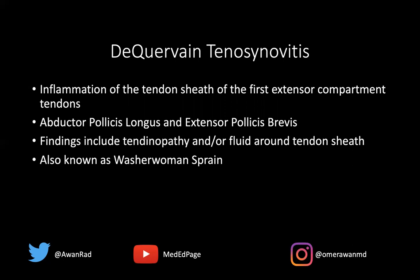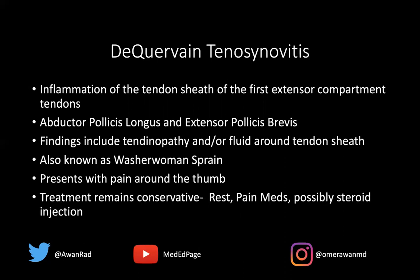De Quervain's is also known as washerwoman's sprain. It was classically described in women who were childbearing and held babies next to their chest, irritating their thumbs. It can be asymptomatic or present with pain along the base of the thumb, which is the most common symptom. Treatment is conservative: rest, ice, pain medications like Tylenol or Advil. Sometimes we inject steroid into the tendon sheath at the first extensor compartment to relieve symptoms.